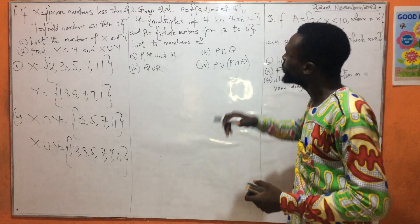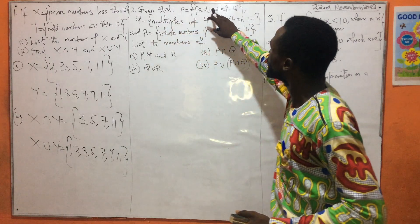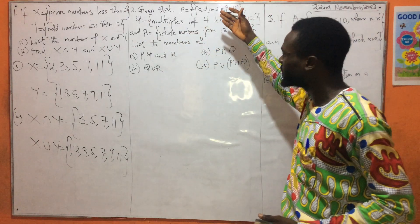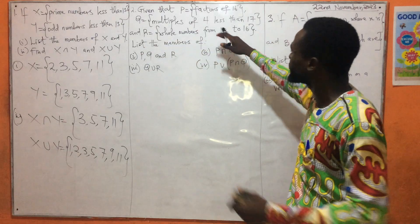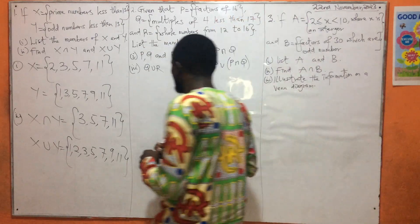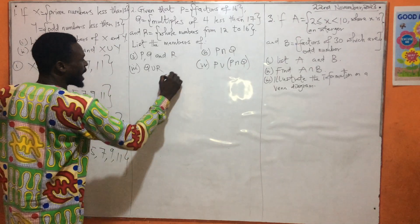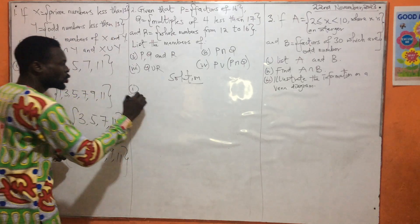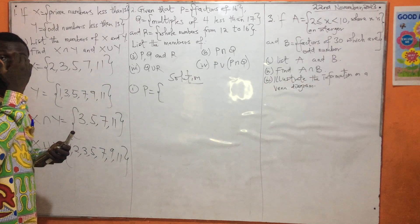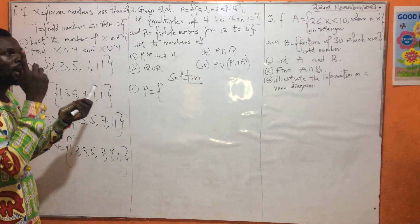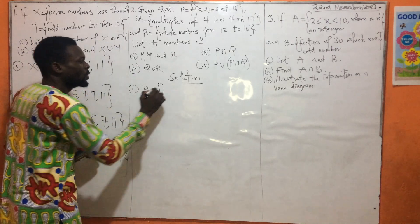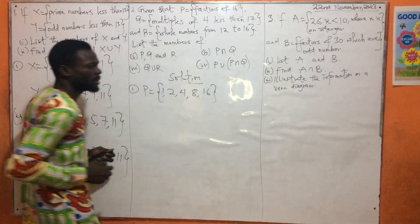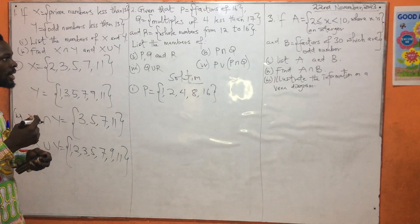Now let's go to Example 2. Example 2 says that P is equal to factors of 16, Q is equal to multiples of 4 less than 17, and R is all whole numbers from 12 to 16. We are going to list what has been asked. P is factors of 16, so the factors of 16 are: 1, 2, 4, 8, and 16.